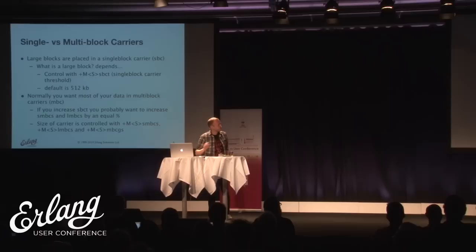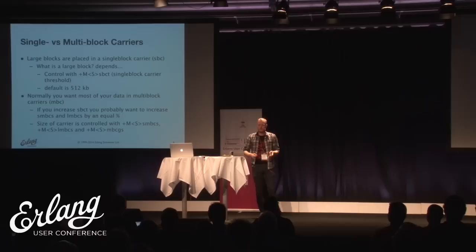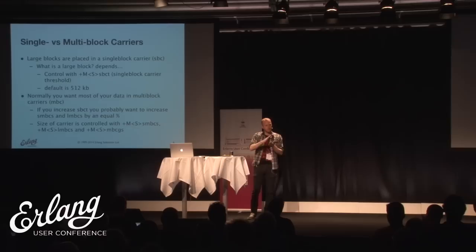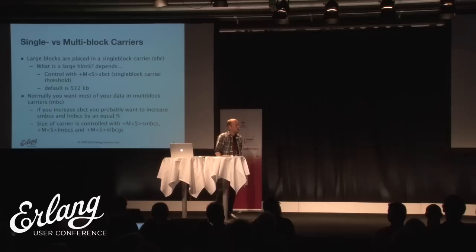You can also control the size of the carriers. The normal size of multi-block carriers grows from 2 megabytes to 8 megabytes over a lifespan of about 10 generations - the first one will be 2 MB and by the tenth it's close to 8 MB. If you adjust the threshold, you also want to adjust the carrier sizes to maintain a reasonable relationship between the two settings.